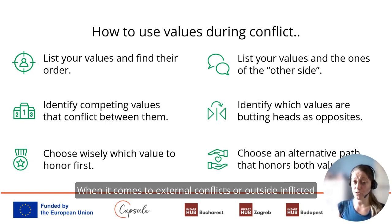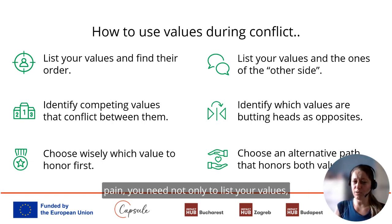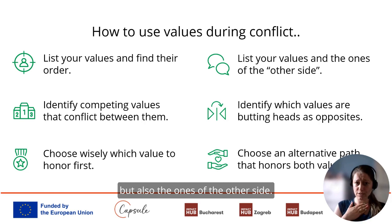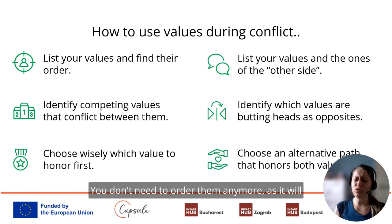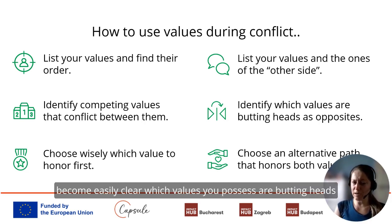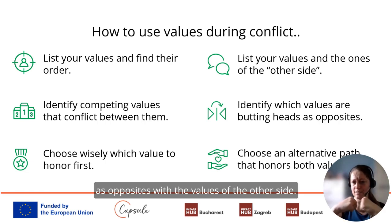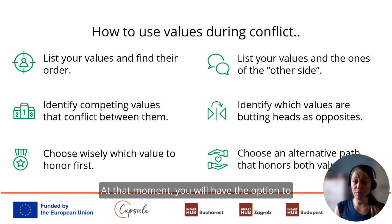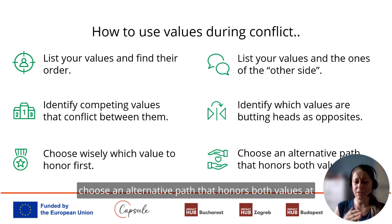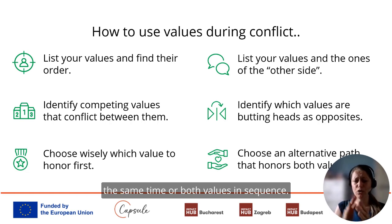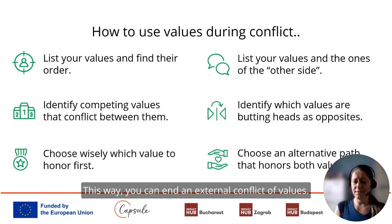When it comes to external conflicts, you need to list not only your values but also those on the other side. It will become clear which values you possess are butting heads with the values of the other side. At that moment, you have the option to choose an alternative path that honors both values at the same time or in sequence — this way you can end an external conflict of values.